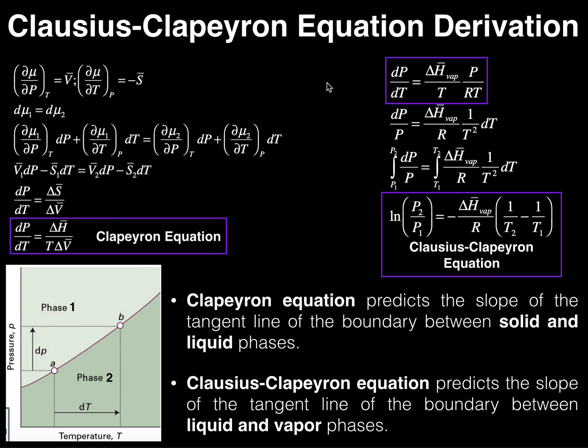Welcome back to physical chemistry on Catalyst University. My name is Kevin Tokoff. Please make sure to like this video and subscribe to my channel. In some of the previous videos we've talked about phase diagrams, which I mentioned was my least favorite part of physical chemistry. It can be kind of confusing. Hopefully we can break this down as we talk about the Clausius-Clapeyron equation in this video.